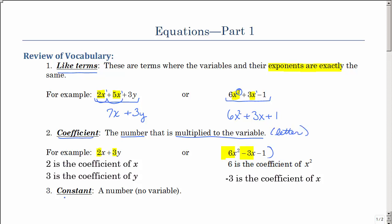So I just use that word constant. A constant is just a number, meaning a variable varies, a constant stays the same. So a 1, a 2, a negative 5, a 1 half, all of those are just constants.